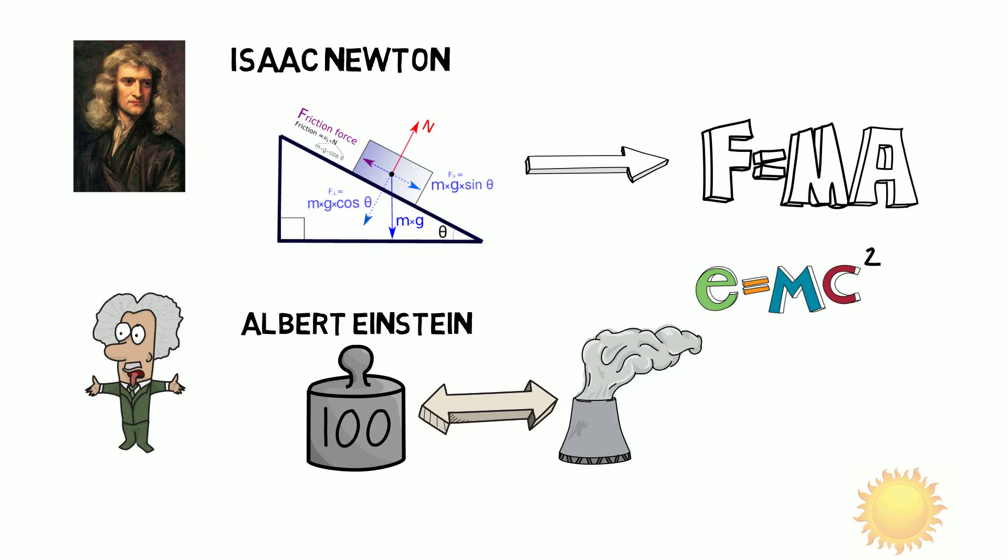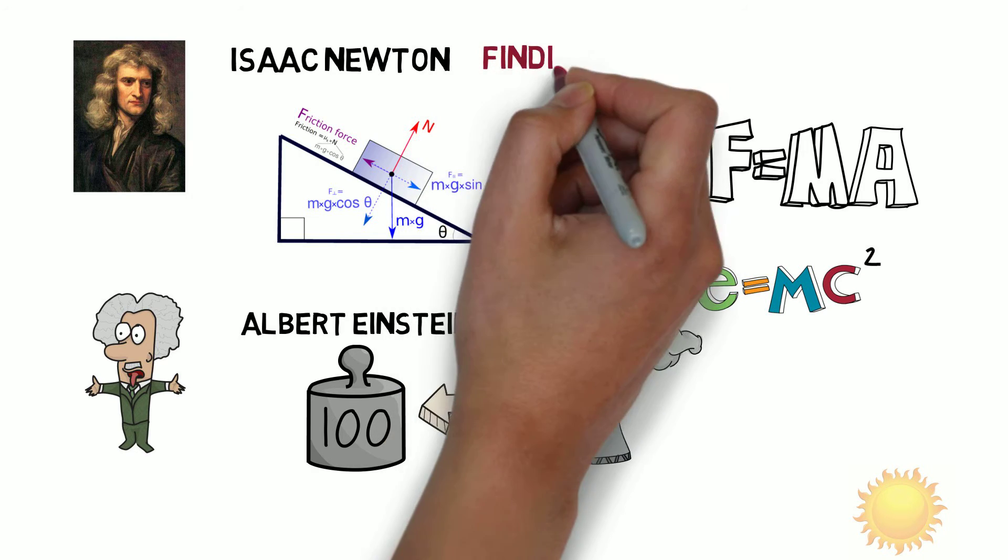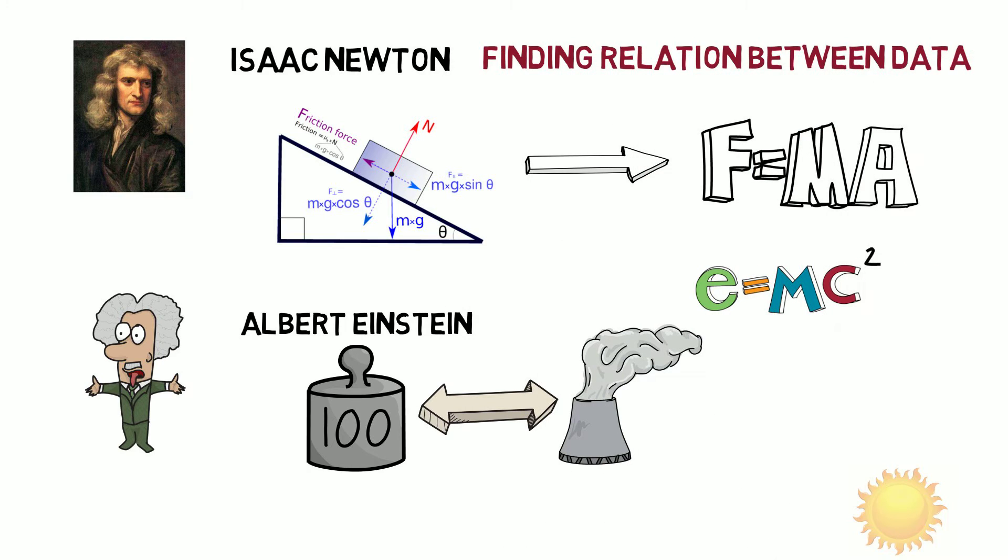So science is all about finding the relationship between data. Relations exist everywhere. The more relations we extract, the better we will understand the situation. All nature's hidden secrets lie in the relationships that exist between different quantities.